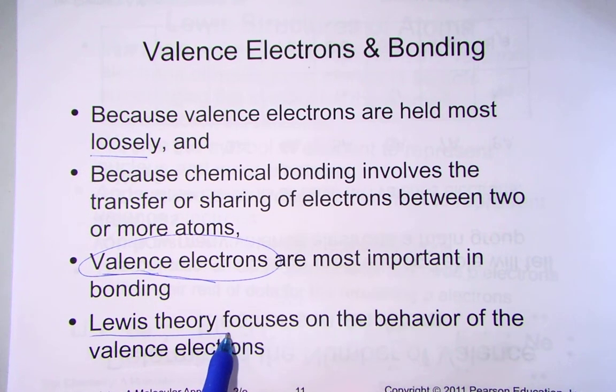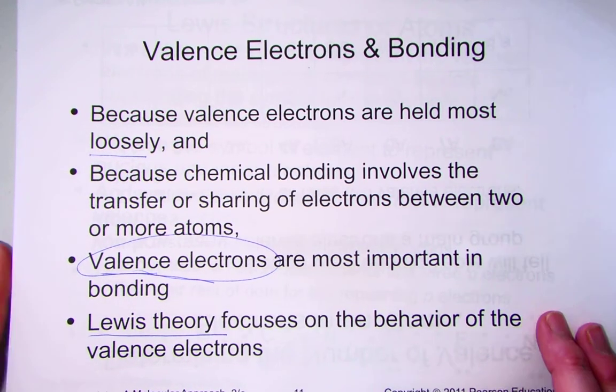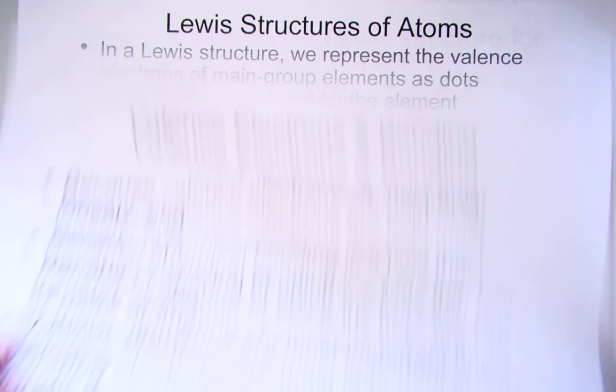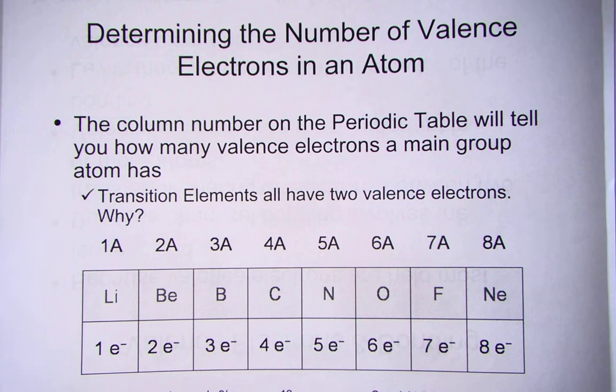The Lewis theory helps us draw models, little pictures using symbols and dots to represent those valence electrons. And we have practiced this in last semester. Using our periodic table, we were able to determine the number of valence electrons for the representative elements only. The column number on the periodic table will tell you how many valence electrons a main group atom has.